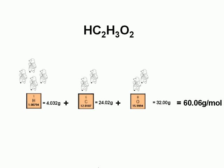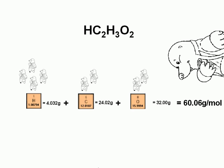This gives us a total of 60.06 grams. Therefore, the molar mass of acetic acid is 60.06 grams per mole.